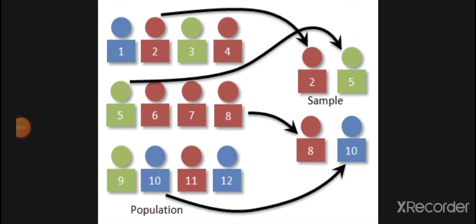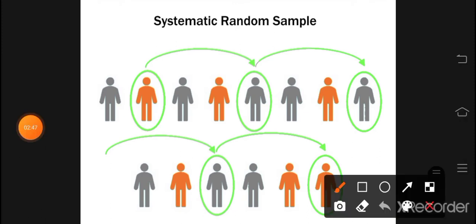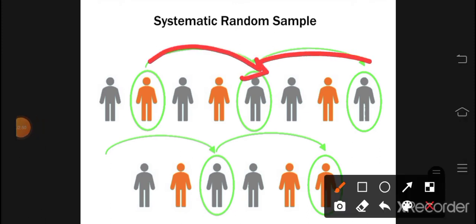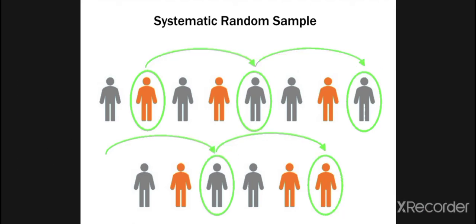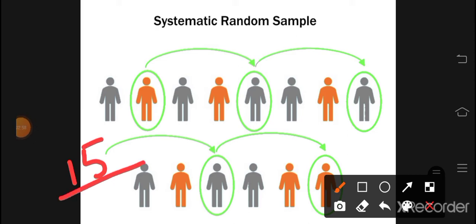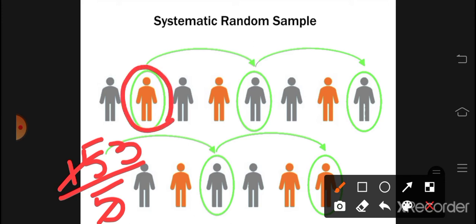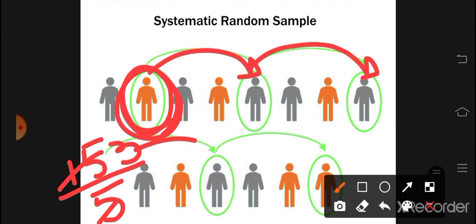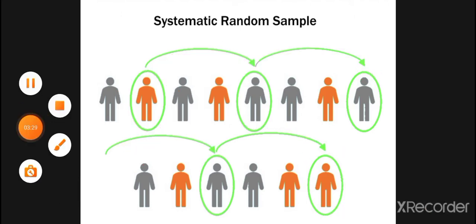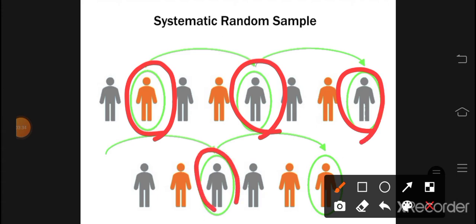Next is systematic random sampling, which involves jumping at intervals. For example, if there are 15 people and you need 5 samples, you divide: 15 ÷ 5 = 3. So you select every 3rd person. You pick the first one, then take a jump of 3 each time: 3, 3, 3, 3. This is the systematic random sampling — a pre-determined system.